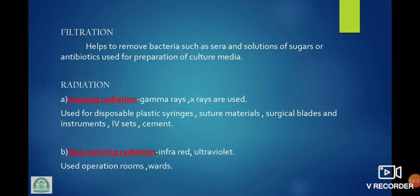Filtration helps to remove bacteria from sera and solutions of sugar or antibiotics; used for preparation of culture media. Radiation — ionizing radiation and non-ionizing radiation. Ionizing radiation: gamma rays and X-rays are used for disposable plastic syringes, suture material, surgical blades and instruments, IV sets, cement. Non-ionizing radiation: infrared and ultraviolet — used in operation rooms and wards.